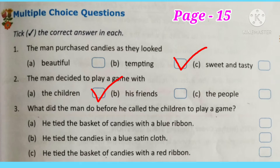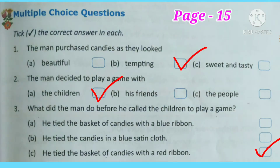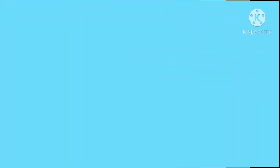The last question: what did the man do before he called the children to play a game? The options are — he tied the basket of candies with a blue ribbon, he tied the candies in a blue satin cloth, or he tied the basket of candies with a red ribbon. The correct option is C — the man tied the basket of candies with a red ribbon.